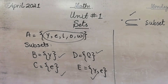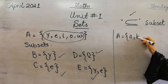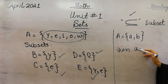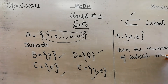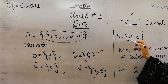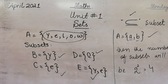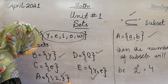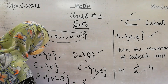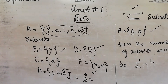Today we will see how to find the number of subsets. If a set A contains two elements, then the number of subsets will be 2 to the power of 2, which is equal to 4. If a set contains three elements — 1, 2 and 3 — then 2 to the power of 3 equals 2 × 2 × 2 = 8. So this is how you can find the number of subsets.